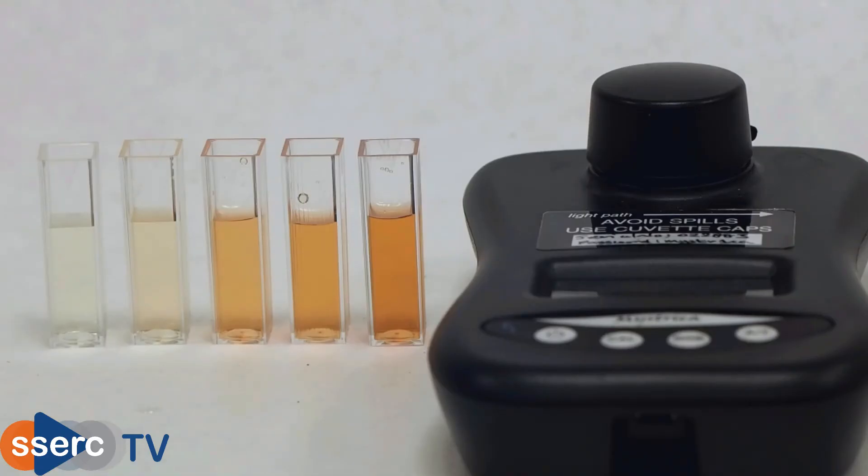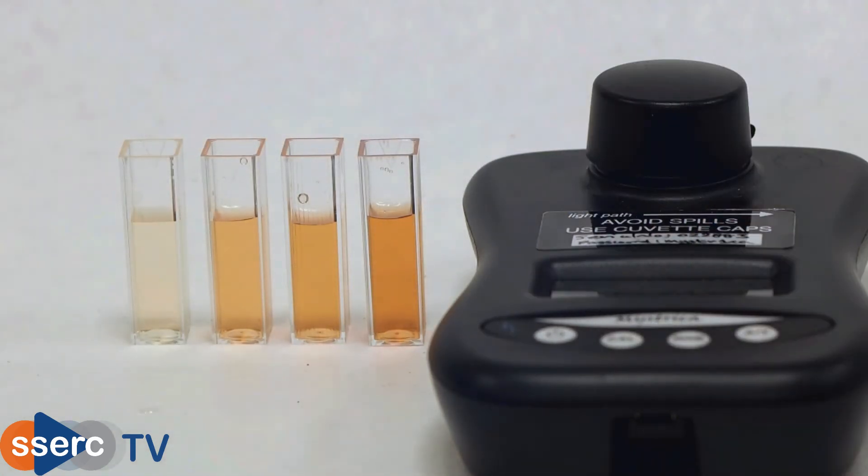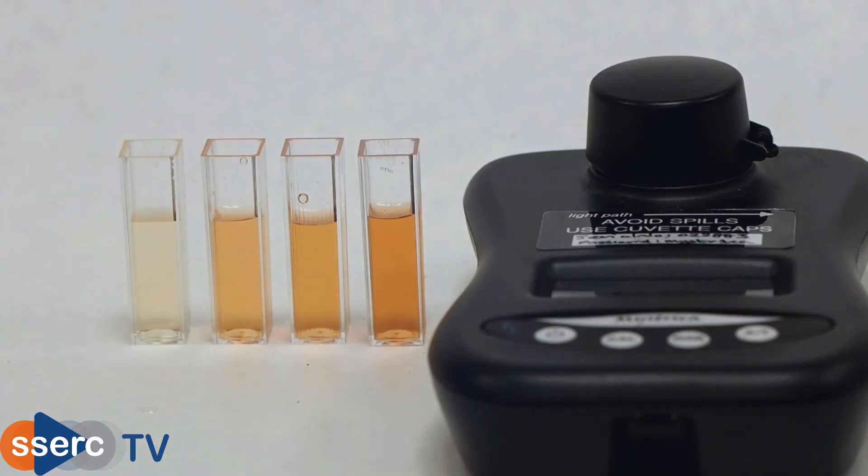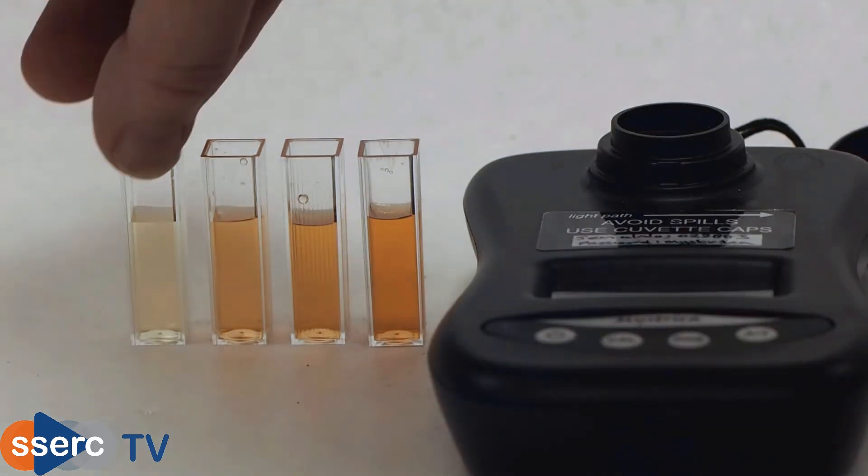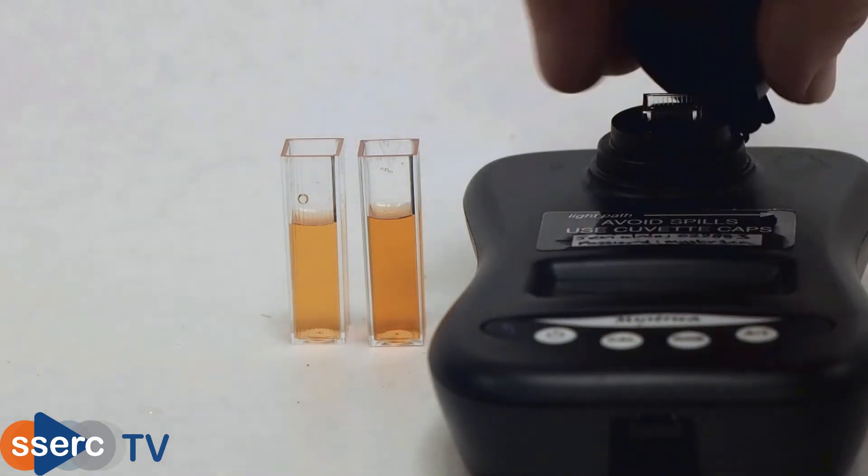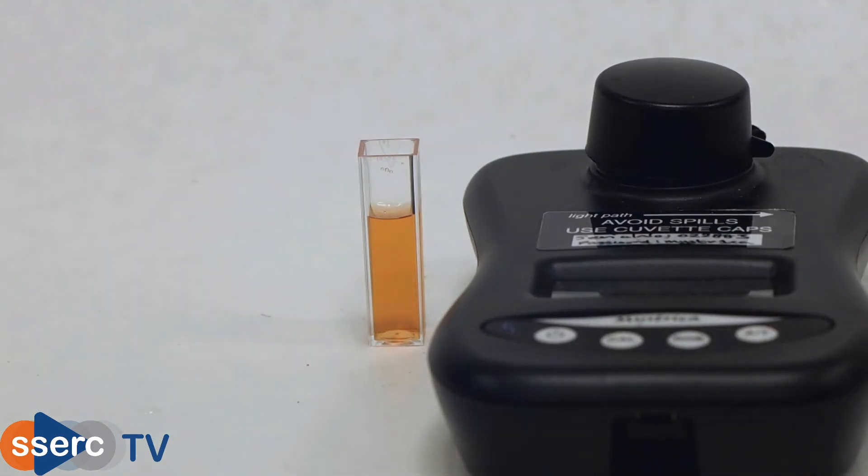Now we transfer three cubic centimeters or so of each solution to a cuvette and determine the absorbance of each. Remember to zero the colorimeter with the cuvette of water first and to use the right wavelength. For the Mystrica colorimeter we're using here, use a blue LED. If you're using a different one, you want a blue or cyan color with a wavelength of around 490 nanometers.